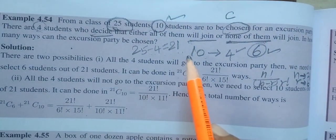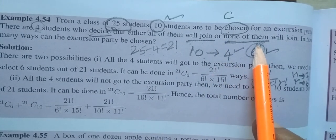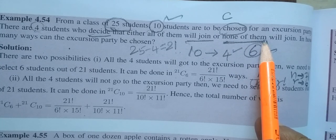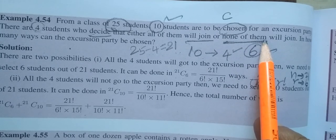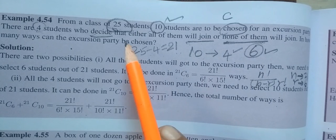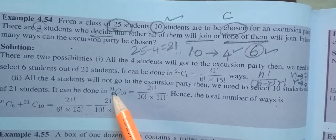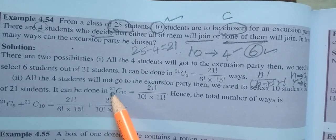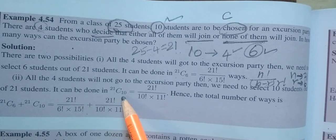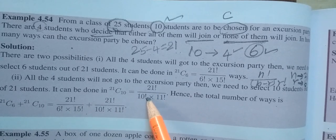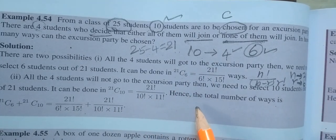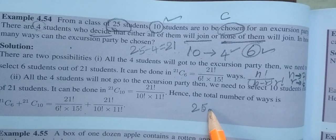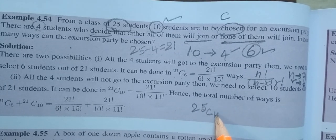Then the next is if the 4 students will not join. None of them. If the 4 students will not join, out of the 25 students, minus the 21 students. How many ways are there?